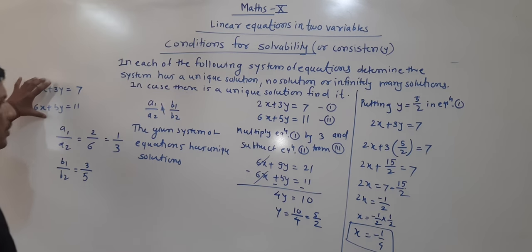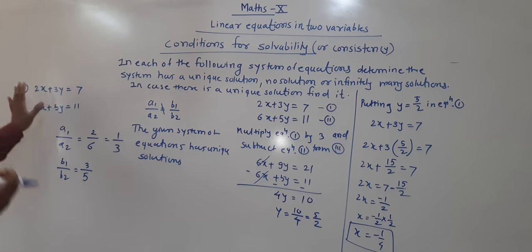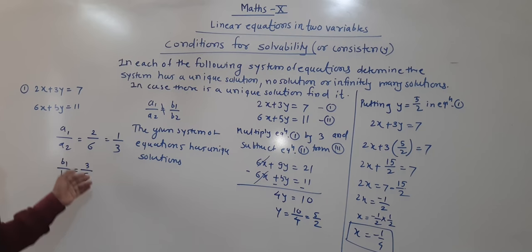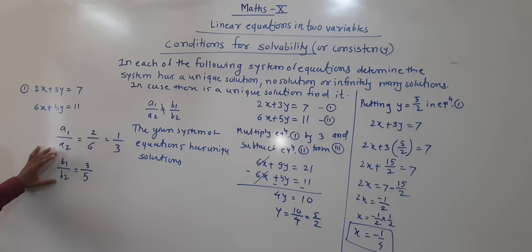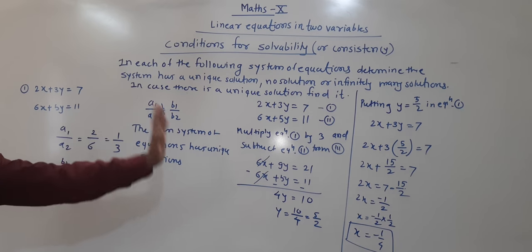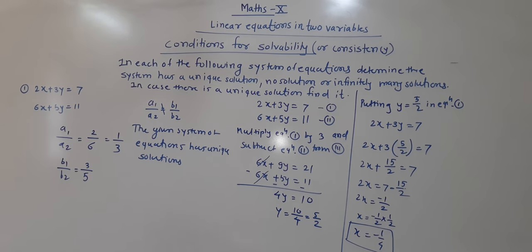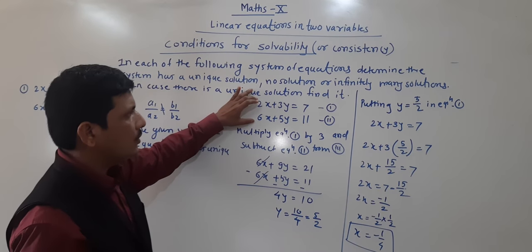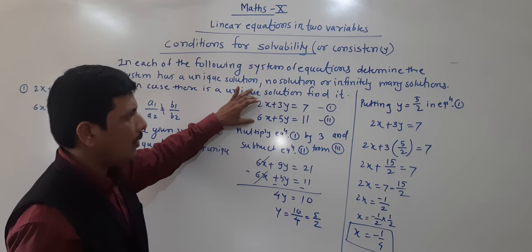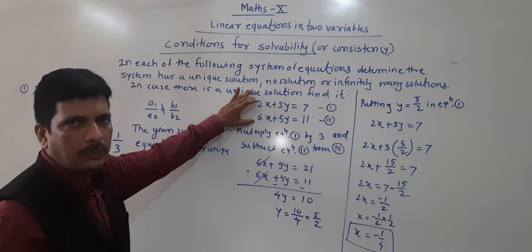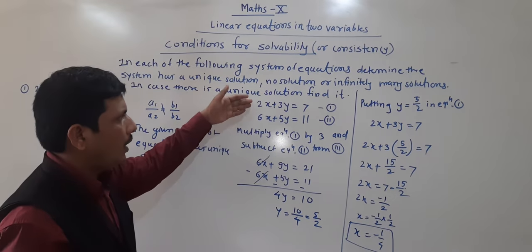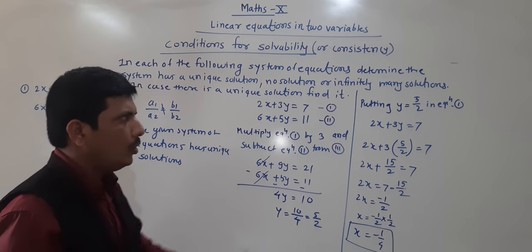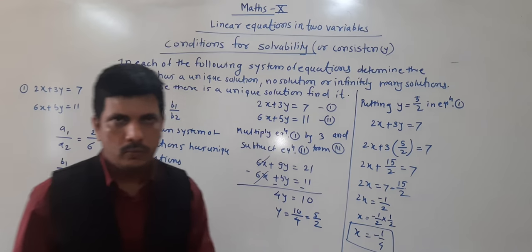Once again: two equations are given. We find the ratios a1/a2 and b1/b2. If both ratios are unequal, there is a unique solution. We multiply equation 1 by 3 to eliminate x, getting y = 5/2. Substituting back gives x = −1/2. This can also be solved by substitution, making coefficients equal, or by cross multiplication.